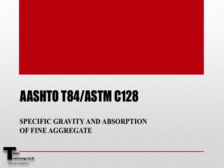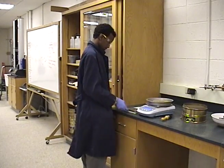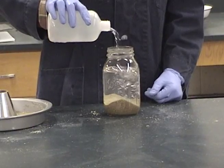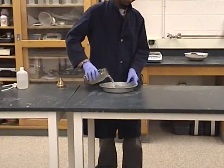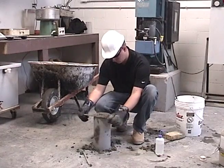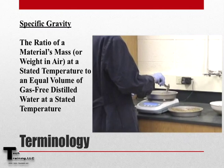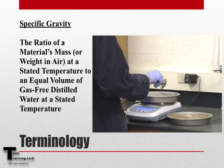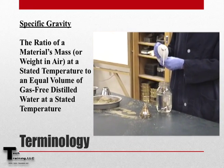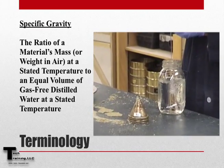AASHTO T84 and ASTM C128 are the standard method of test for specific gravity and absorption of fine aggregate. The purpose of the relative density or specific gravity test, as well as absorption, are to determine the physical properties of the fine aggregate. A change in this number may change the proportions in a concrete mixture. Specific gravity is the ratio of a material's mass or weight in air at a stated temperature to an equal volume of gas-free distilled water, also at a stated temperature.